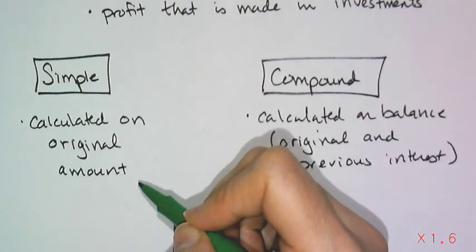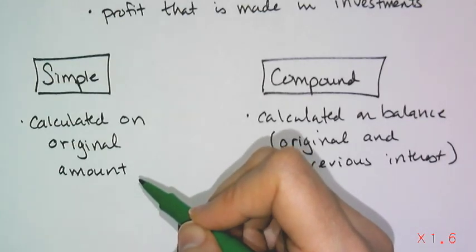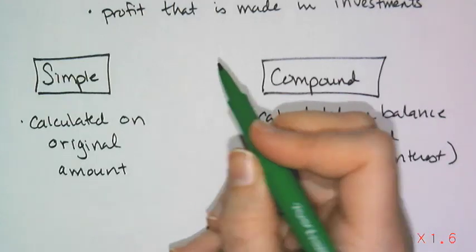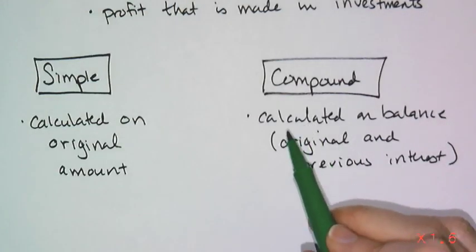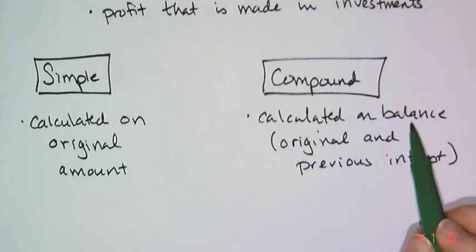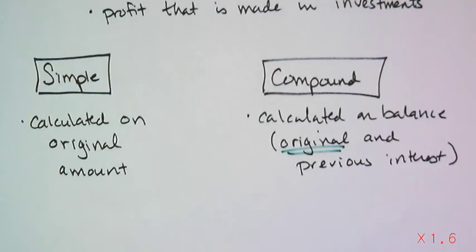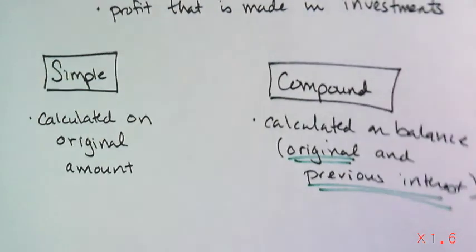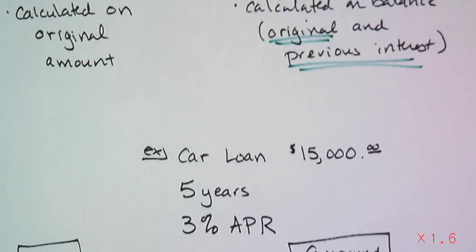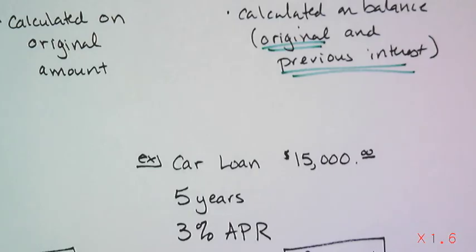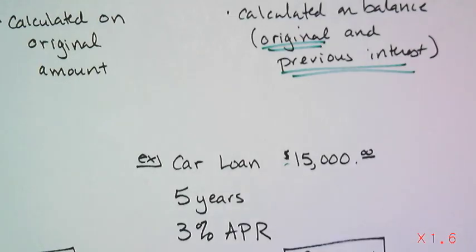Simple interest is calculated only on the original amount — just how much you borrowed or invested. Compound interest is calculated on the balance, which is not only your original amount but any interest that was calculated before. To see the difference, we'll look at someone taking out a car loan.